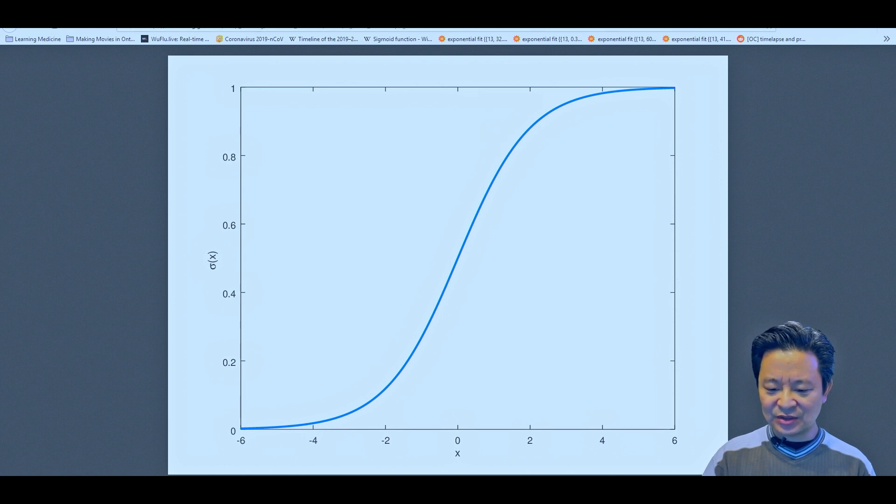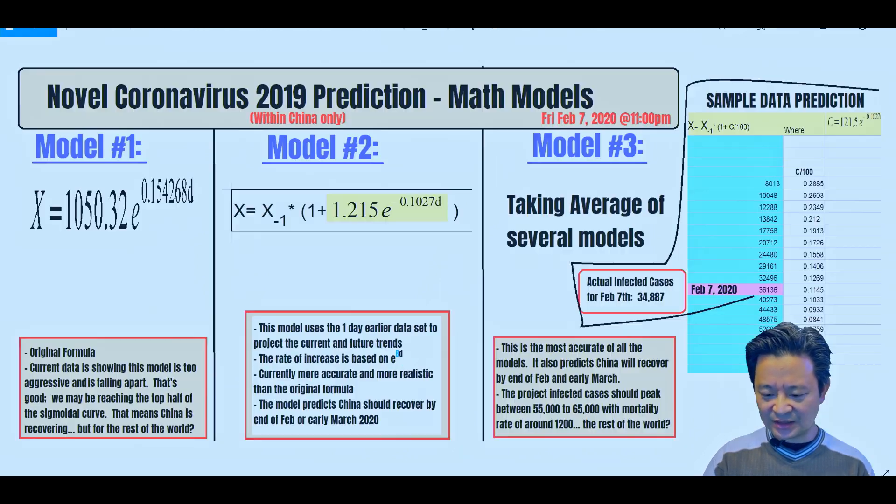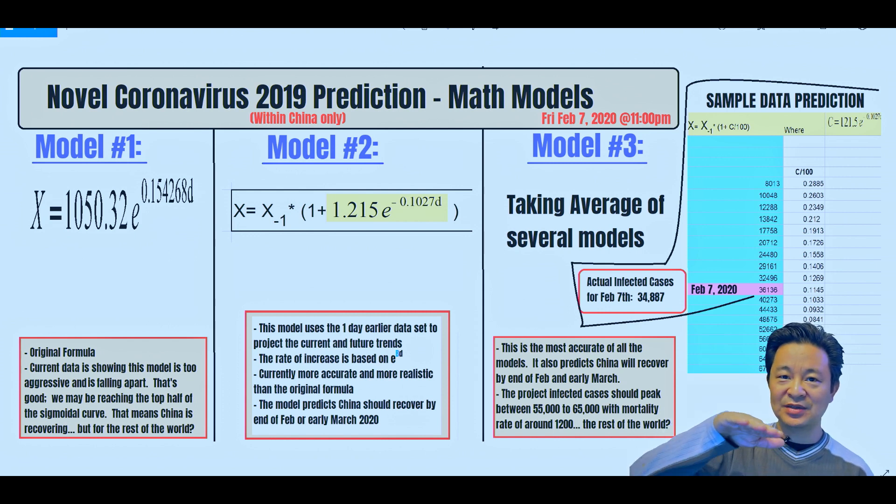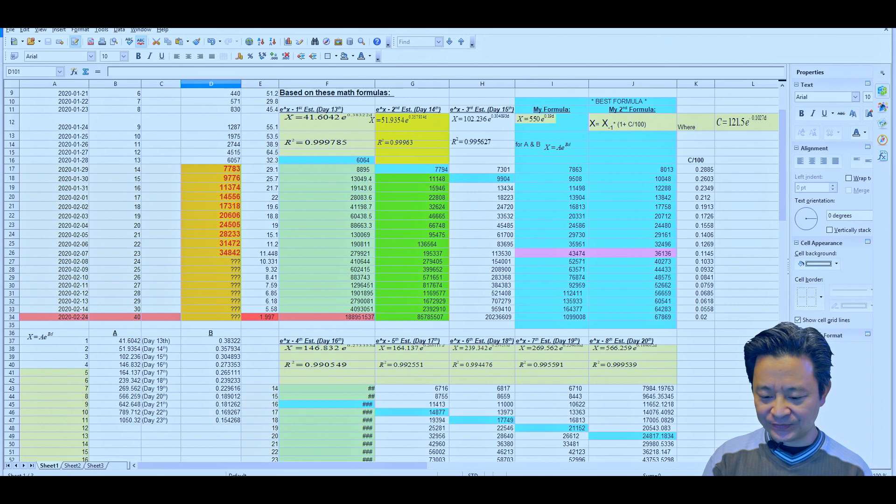The first model is a bit aggressive and always gets it wrong after the third day because it's projecting exponentially, but the curve is slowly coming to a plateau. Model 2 is more accurate. It's based on the previous data, so this x minus 1 is a sample yesterday times the rate that's changed, and the rate is decreasing exponentially.